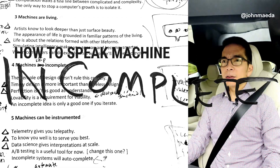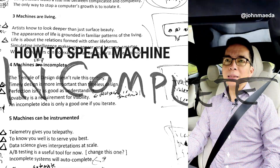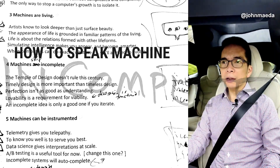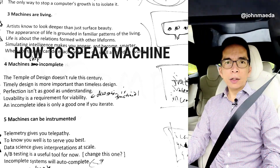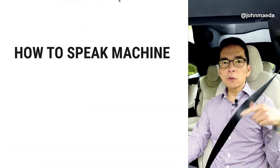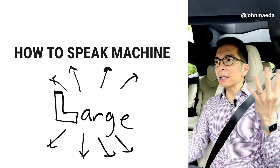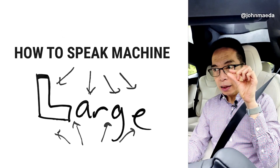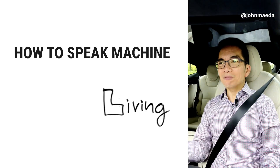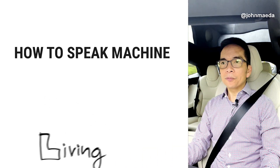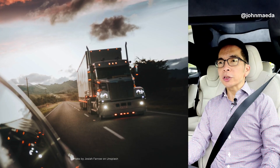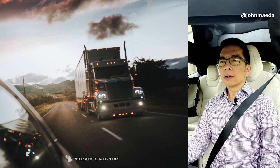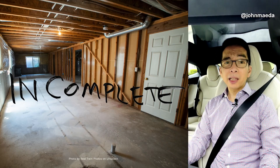Incomplete is an important idea because when you have an alien material like computation, which can loop forever, which can expand infinitely large, infinitesimally detailed, and it behaves like a living thing, you can ship software that is not finished.